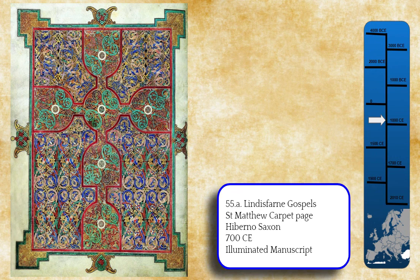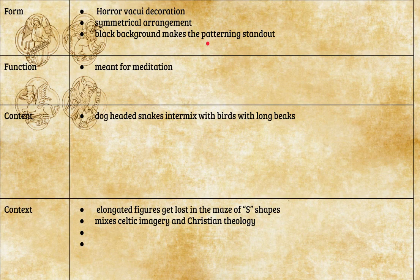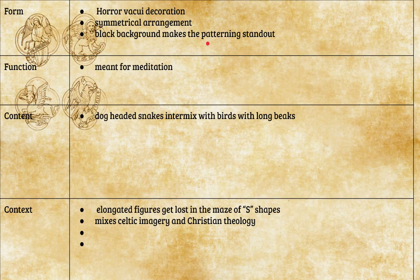Each book in the Lindisfarne Gospels — Matthew, Mark, Luke, and John — will have a different carpet page. This is the carpet page from Saint Matthew. They're also mixing zoomorphic forms in the designs — when you click on the image to zoom in, look for the animal heads. They add black to make the patterning stand out.